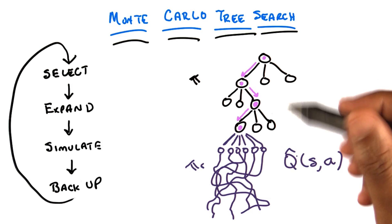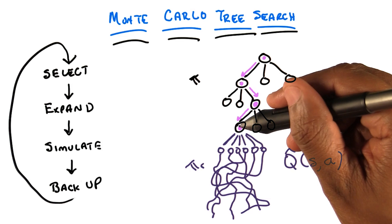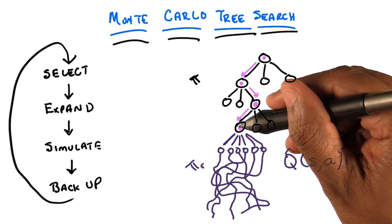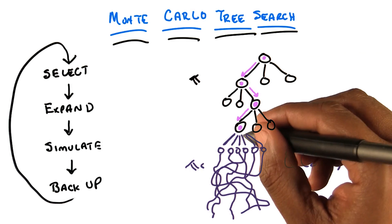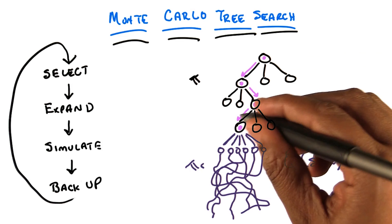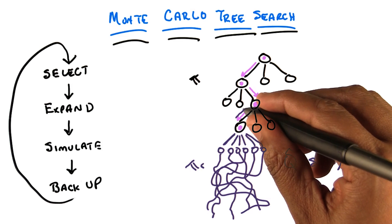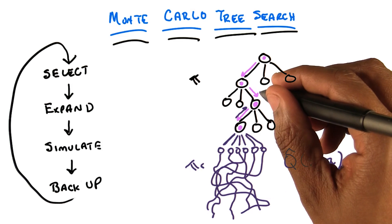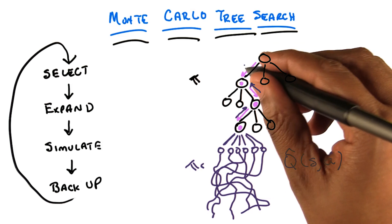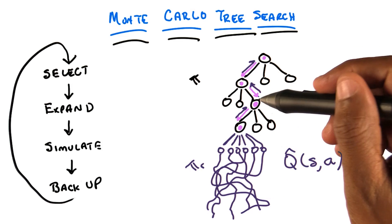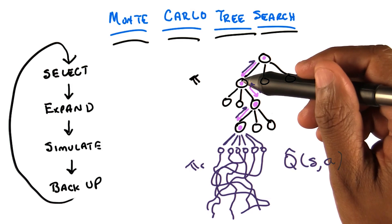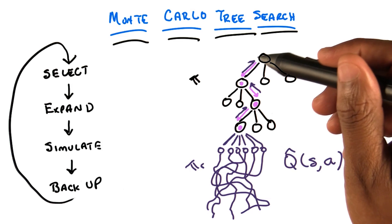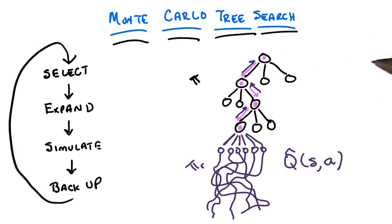But it does more than that. Now that I have an estimate of the Q function for this state, backed up from here, I can actually back up information all the way to the top. And that updates the estimate of this particular node, this particular node, and this particular node.